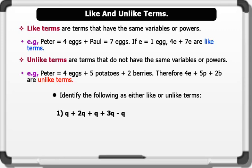One: Q plus 2Q plus Q plus Q plus 3Q minus Q. They all have same variable Q and are called like terms. Two: X plus 2Y plus 2Y plus X plus 3Y. They have different variables X and Y and are called unlike terms.